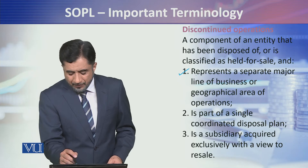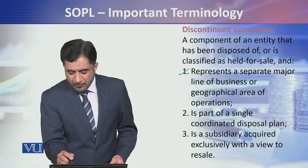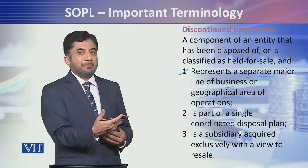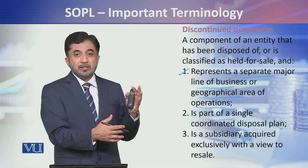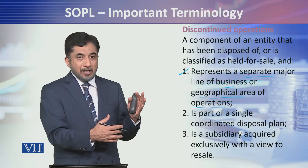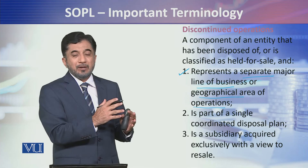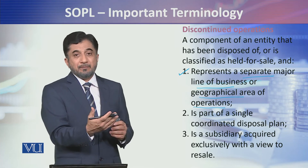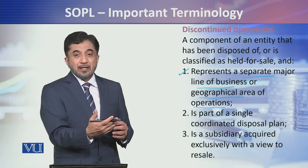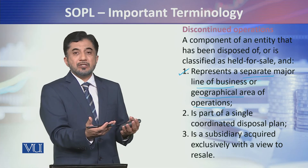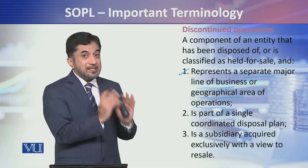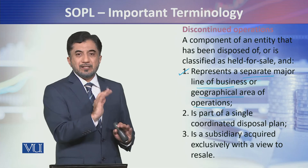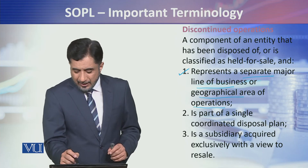यहां पर तीन points discuss करना बहुत जरूरी है। पहला — it represents a separate major line of business। दूसरा — एक geographical area of operations: आपकी different branch है, उस different city में एक branch है। आप Azad Kashmir की branch को समझते हैं कि that is not viable — Muzaffarabad में आपकी जो branch है उसको आप discontinue करते हैं। उस operation को आप separately disclose करेंगे, सिर्फ उस साल में जिस साल में आपने discontinue किया, उसके results को separately disclose करेंगे।